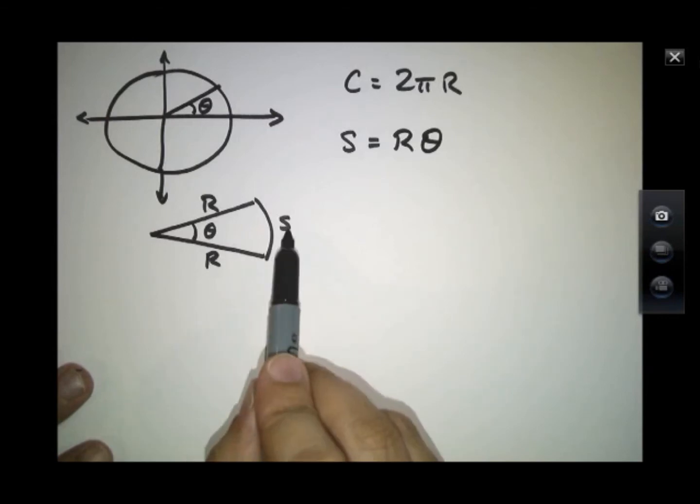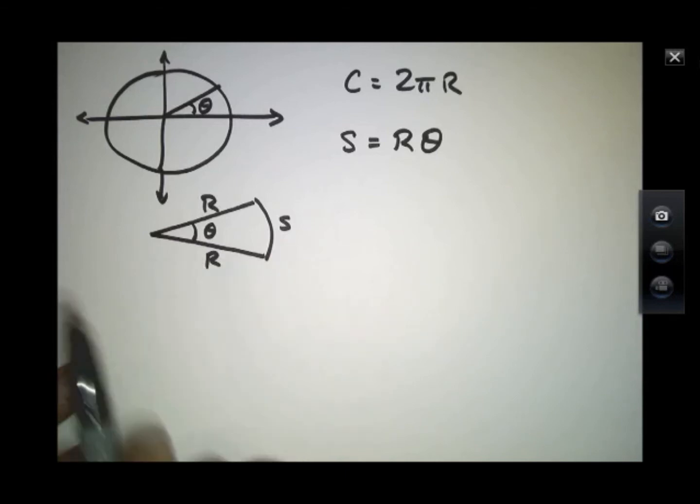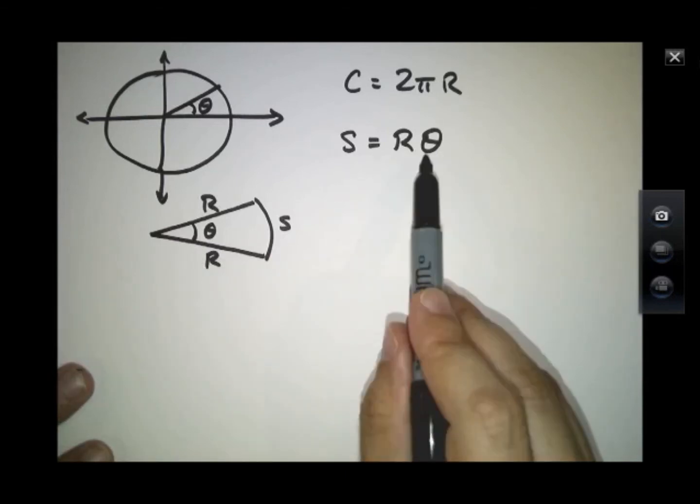Clearly this side, this length, gets large if r gets really big, and it gets big if theta gets really big. Well, this relationship works as long as theta is measured in what's called radians.